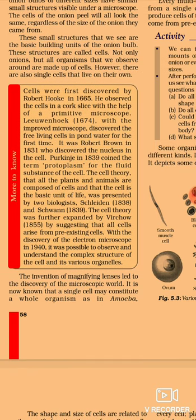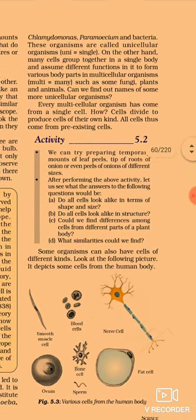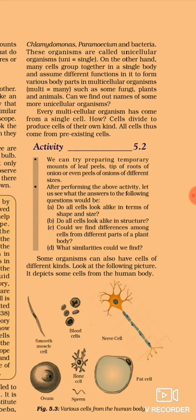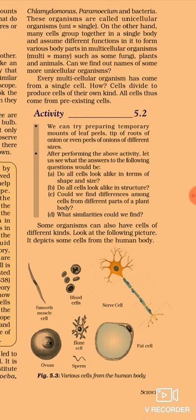The invention of magnifying lenses led to the discovery of the microscopic world. It is now known that a single cell may be considered a whole organism. As we studied in class 8, there are some organisms made up of only one cell, like amoeba, paramecium, and euglena — a single cell is the whole organism. On the other hand, cells may form groups and assume different functions. Some organisms are made up of more than one cell — these are known as multicellular organisms. All cells come from pre-existing cells.